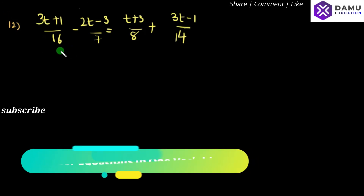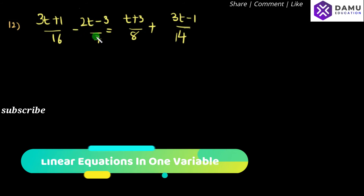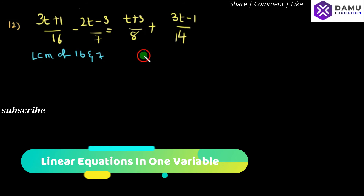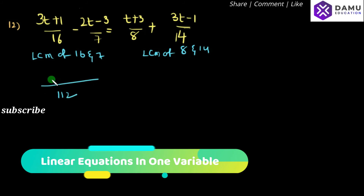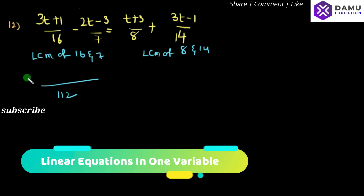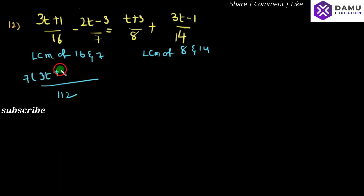Here, the equation is: 3t plus 1 by 16 minus 2t minus 3 by 7 will be equal to t plus 3 by 8 plus 3t minus 1 by 14. So, first of all, we have to take LCM of 16 and 7 on the left side, and LCM of 8 and 14 on the right side. Take LCM — for 16 and 7, multiply 7 into 3t plus 1 minus 16 into 2t minus 3.